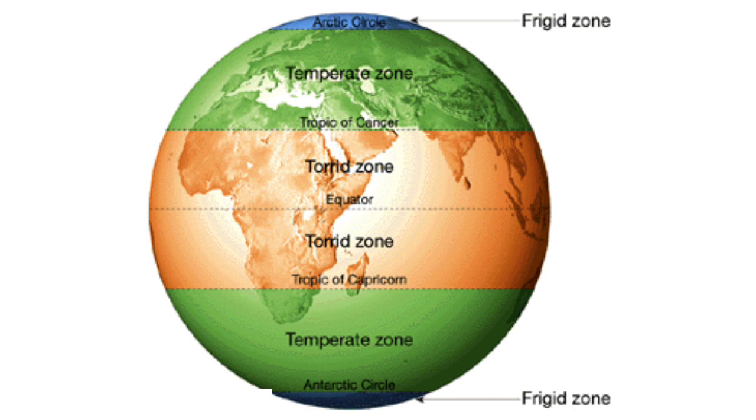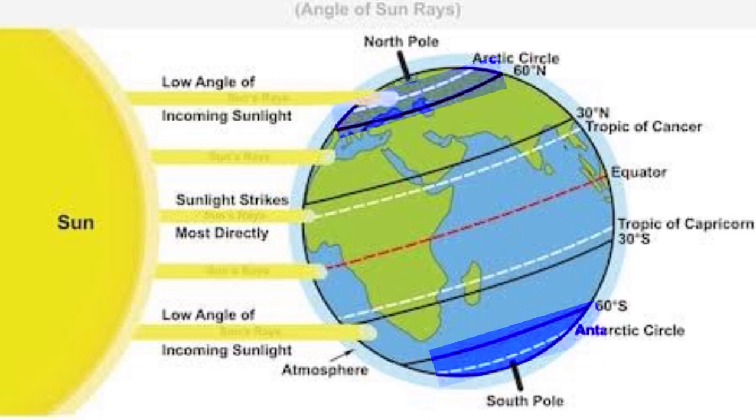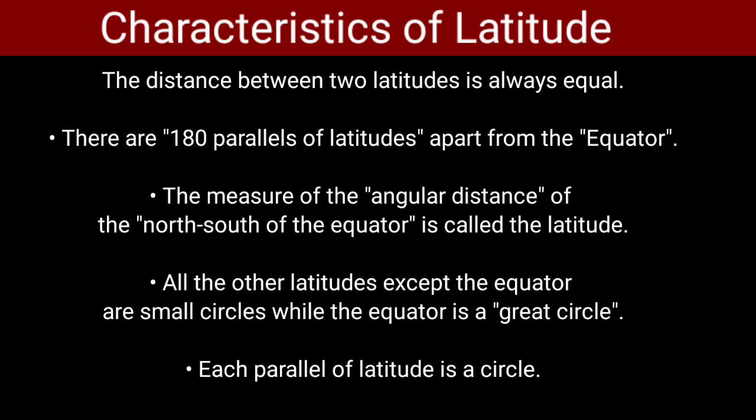Latitudes help us determine heat zones: torrid zone, temperate zone, and frigid zone. These heat zones are formed because of the angle of the sun's rays and the inclination of the earth's axis. From Tropic of Cancer to Capricorn is the torrid zone, which receives direct rays. From Arctic to Tropic of Cancer and Tropic of Capricorn to Antarctic is the temperate zone, where the angle of incoming solar rays becomes low. Beyond the Arctic and Antarctic circles is the frigid zone.